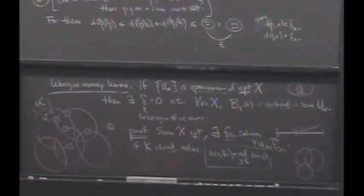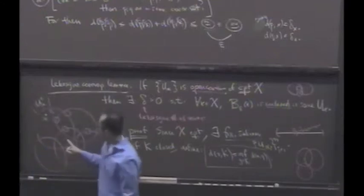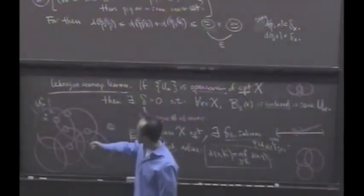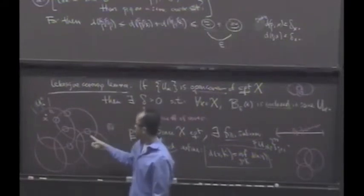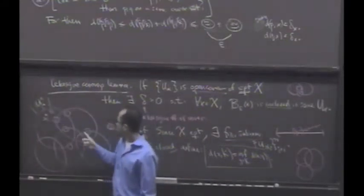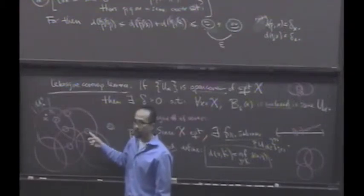What would it mean if I found a delta, a Lebesgue number delta? What would that mean? Yeah. Would you agree, if I could throw pancakes down and have them land in a set, that's really saying that this distance from one of the complements is at least bigger than delta.